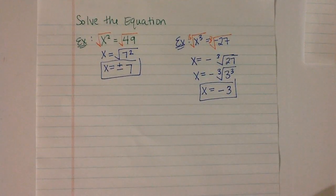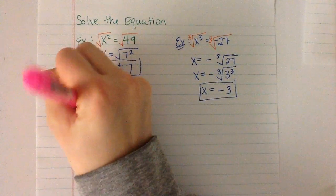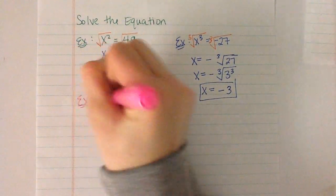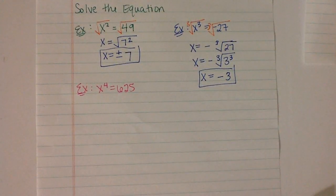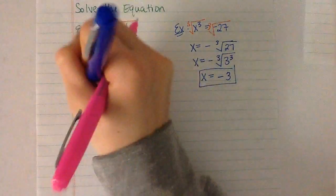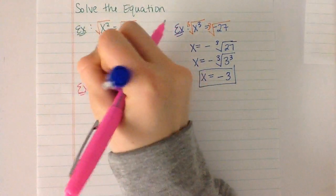Alright, last example. We have x to the 4th equals 625. So to undo the 4th, we have to take the 4th root of both sides.